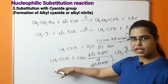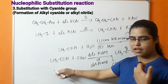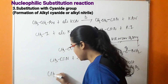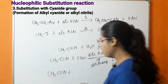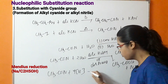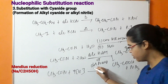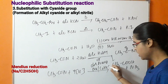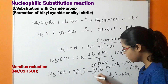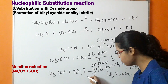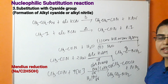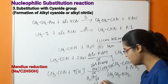We can also perform reduction of ethane nitrile. The reaction known as Mendius reaction uses sodium in the presence of ethanol as the reagent, resulting in the formation of a primary amine. Alternatively, catalytic reduction can be performed using hydrogen gas in the presence of nickel catalyst, or using reducing agents such as lithium aluminium hydride (LiAlH₄).